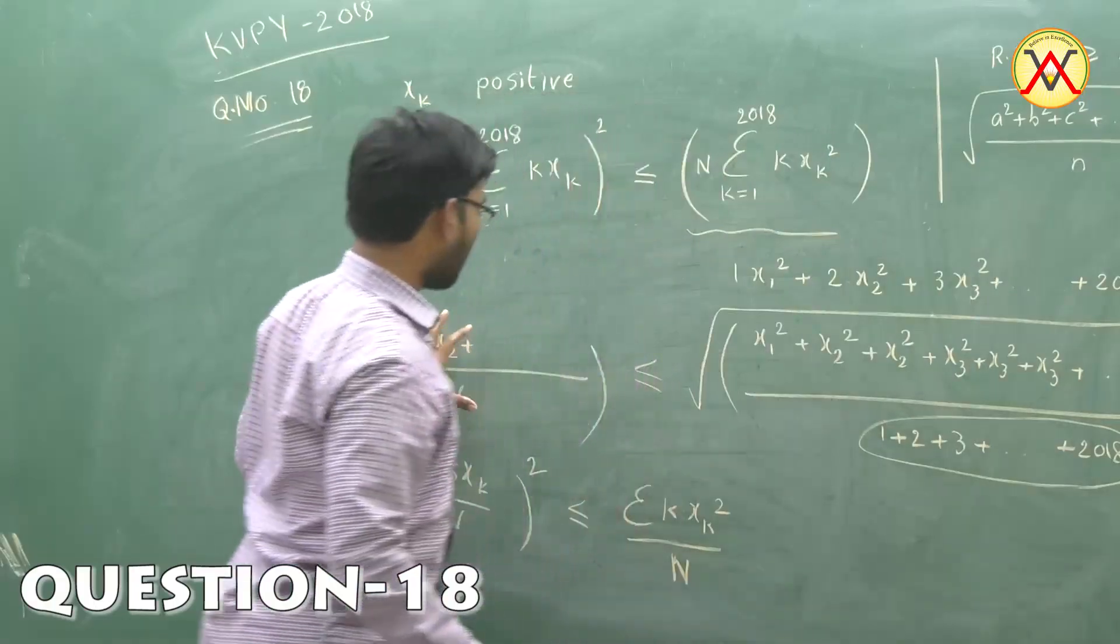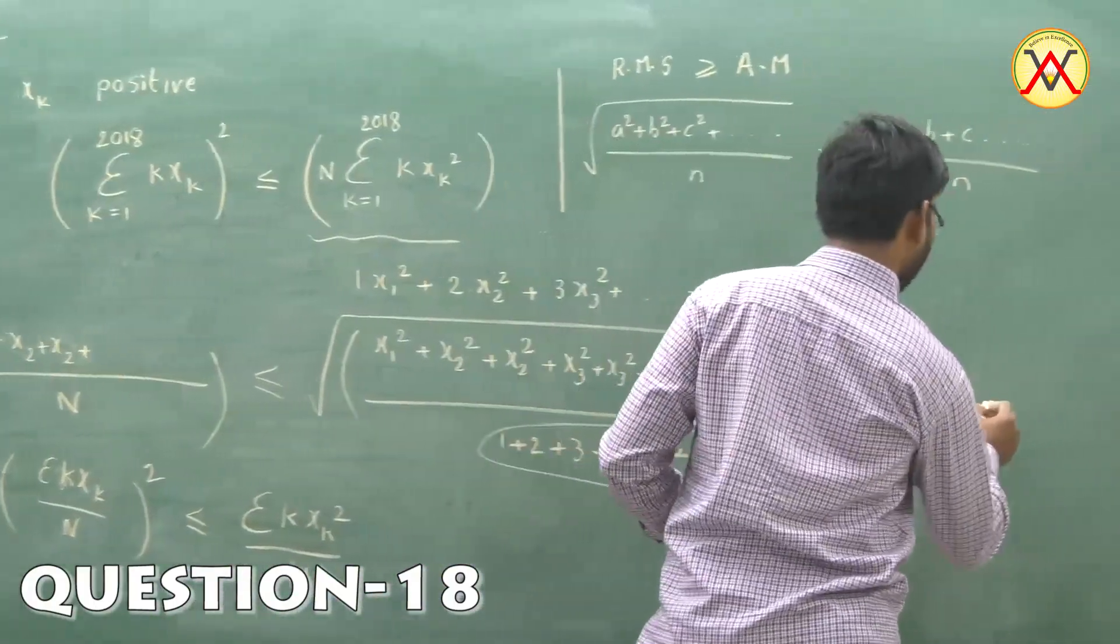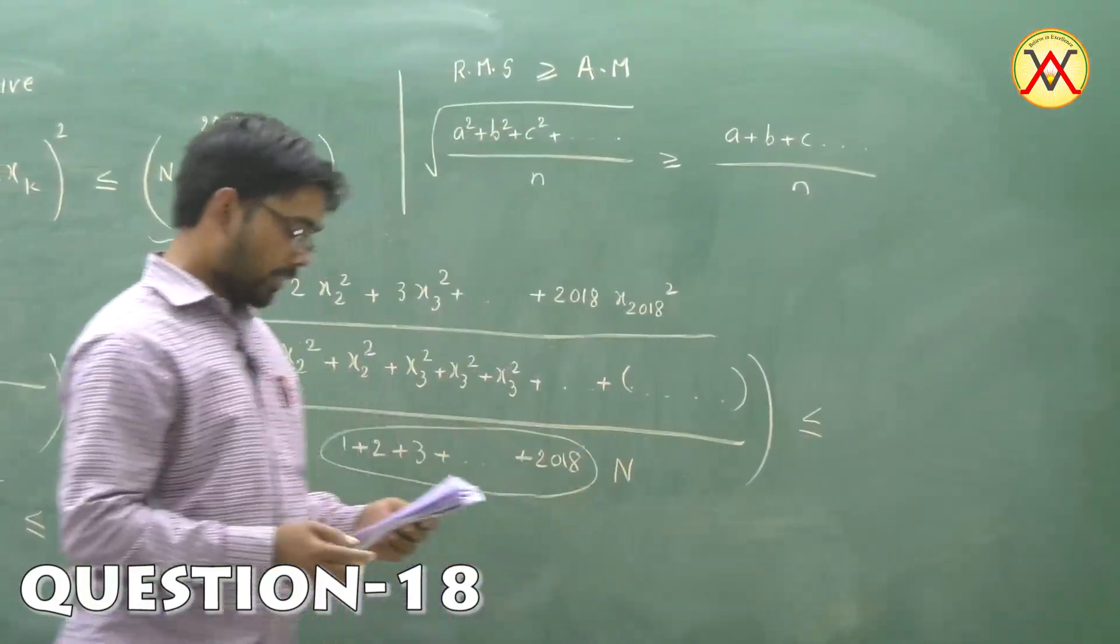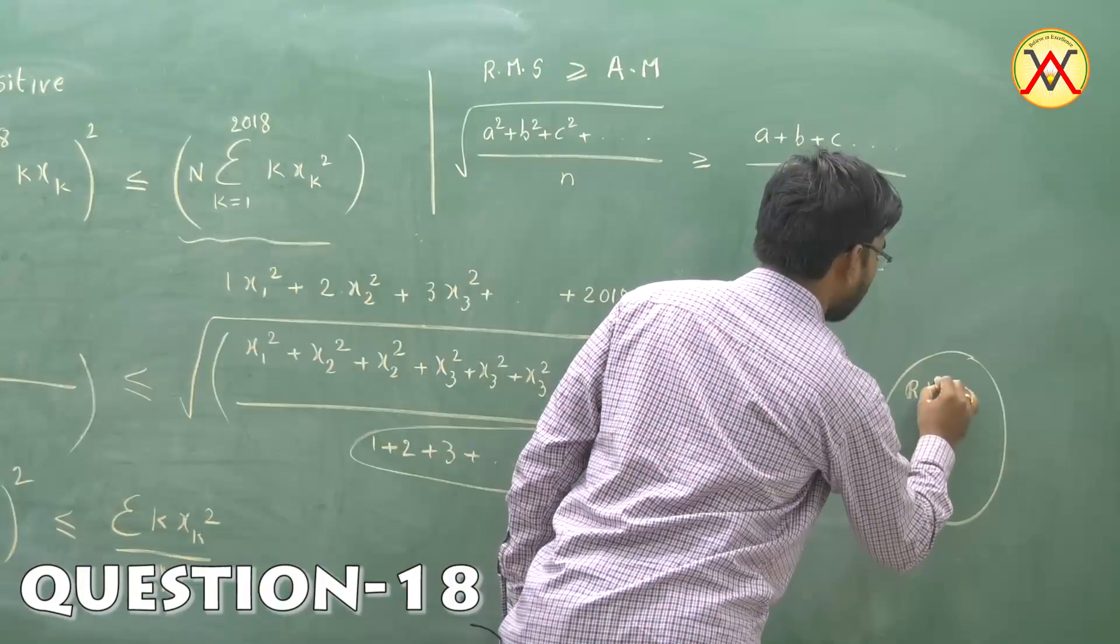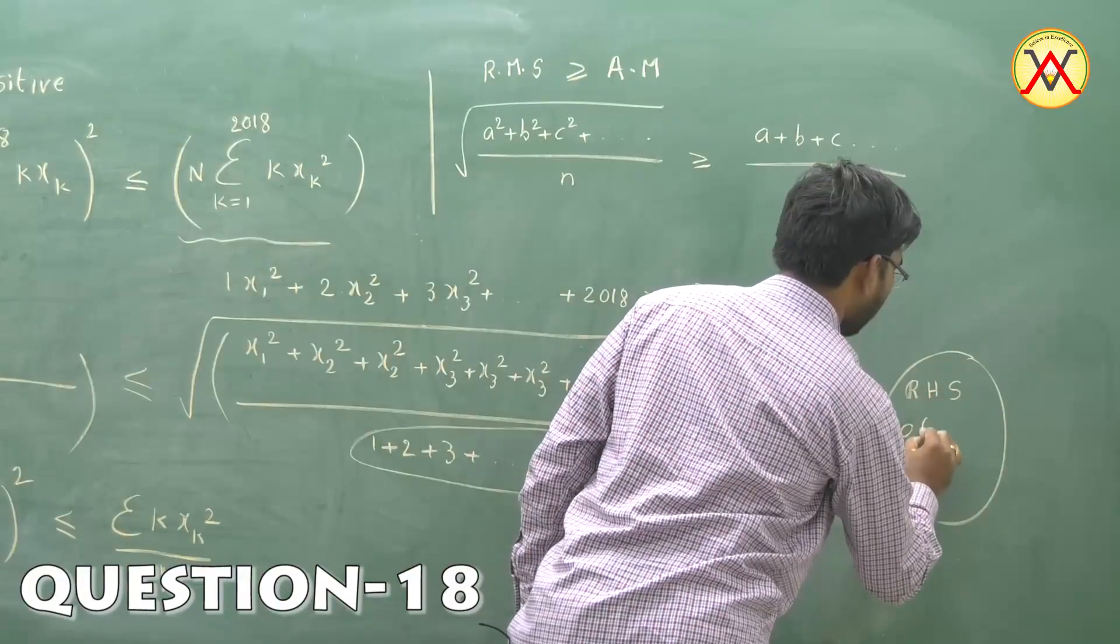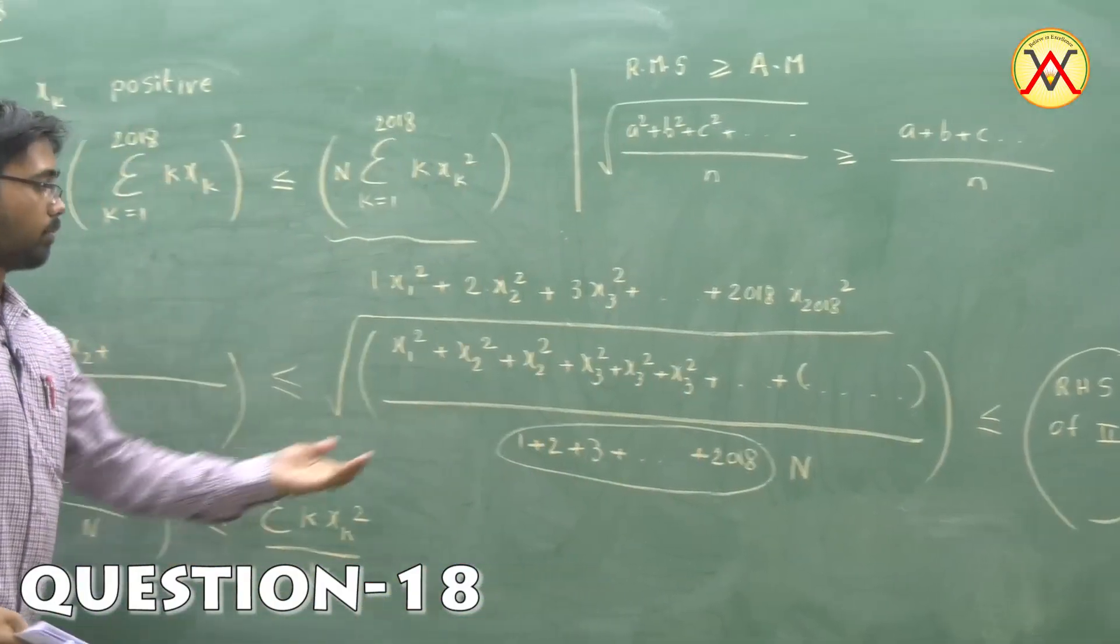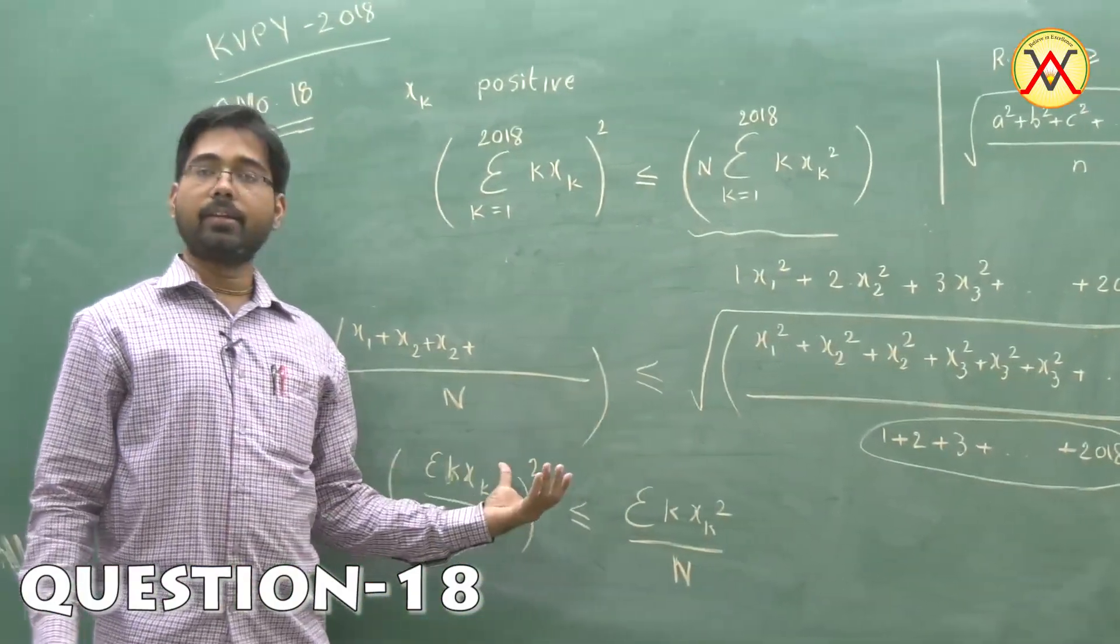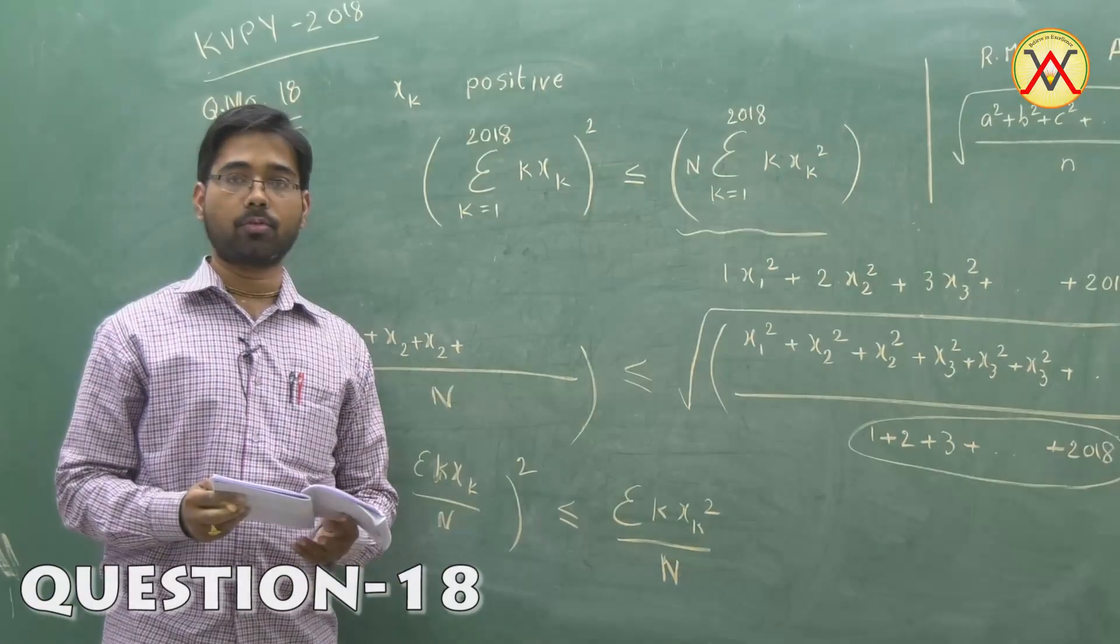This quantity is less than the first inequality, and the RHS of the second inequality is still bigger. So straightaway we can say inequality 2 is also true. Both 1 and 2 are true.